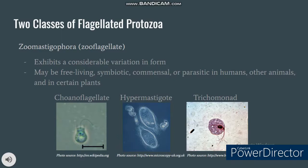On the other hand, the second class of flagellated protozoa is Zomastigophora, also known as zooflagellates, which leans more toward kingdom Animalia. This class exhibits considerable variation in form and may be free-living, symbiotic, commensal, or parasitic in humans, other animals, and certain plants. Examples of zooflagellates are choanoflagellates, considered to be the closest living relatives of animals; hypermastigotes, that are parasitic or symbiotic in the digestive systems of termites and cockroaches; and trichomonads, which can be found in the urogenital tract and oral cavity of humans. Recent classifications question the taxonomic usefulness of this division because some zooflagellates have photosynthetic capabilities and some phytoflagellates have heterotrophic capabilities, just like Euglena and Cryptomonad.